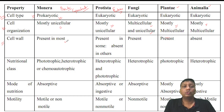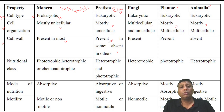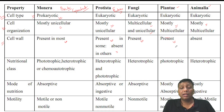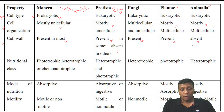Regarding cell walls: in Monera, bacteria and cyanobacteria have cell walls. In Protista, cell wall is present in some but absent in others — a 50-50 condition. Fungi have cell walls present. Plantae have cell walls present — that is a main characteristic of plants. Animalia: cell wall is totally absent. This was a question in the 2020 prelims — plant have a cell wall as outermost covering, but in animal cells the cell wall is totally absent.